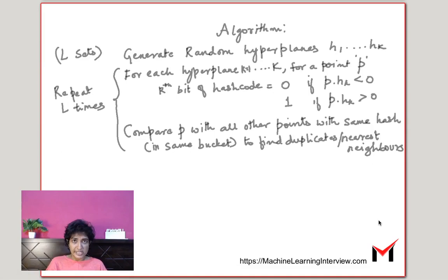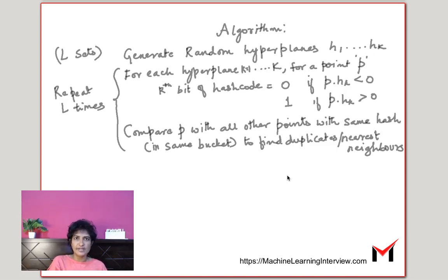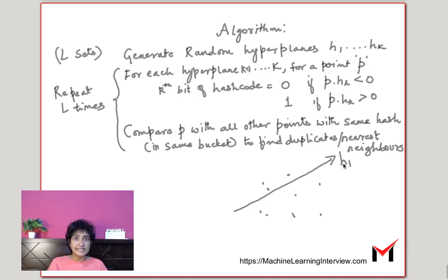We will now look at the random projections technique for locality-sensitive hashing. What we want to do is find a hash or a bucket for each point such that similar points have the same hash or end up in the same bucket, and dissimilar points end up in different buckets or have different hashes. So let's say we have a bunch of points. The random projections technique involves generating a set of random hyperplanes. Suppose I generate this hyperplane here — let's call it H1.